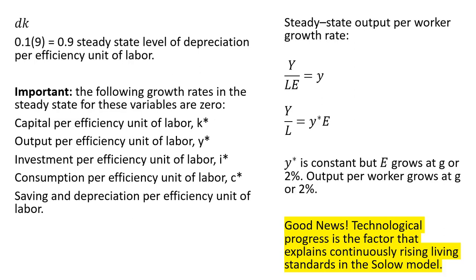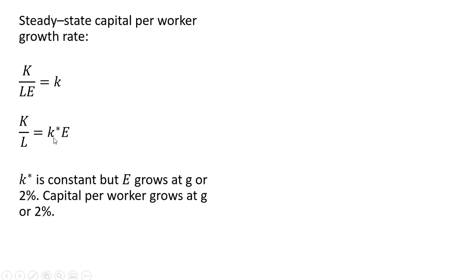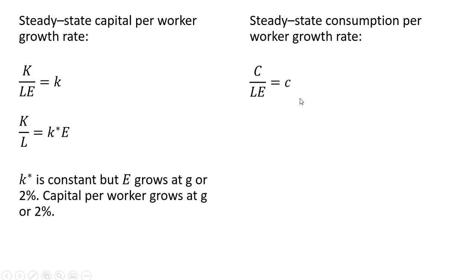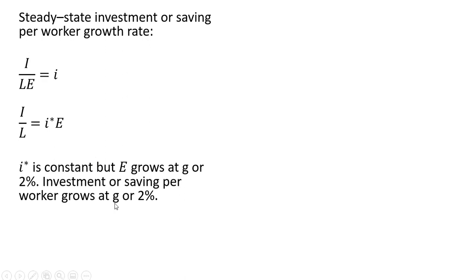The steady-state capital per worker growth rate: capital per efficiency unit of labor times E gives capital per worker. Since k* is constant but E grows at 2%, capital per worker also grows at g in the steady state. Similarly, consumption per worker grows at a constant rate of 2%, and steady-state investment or saving per worker grows at g, or 2%.